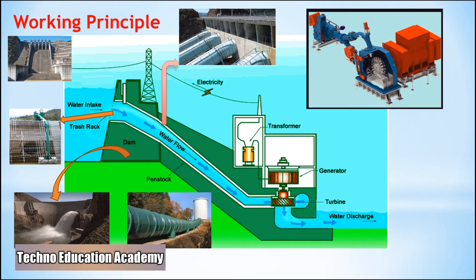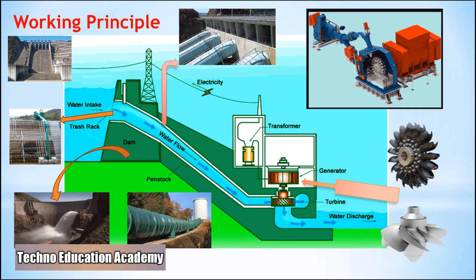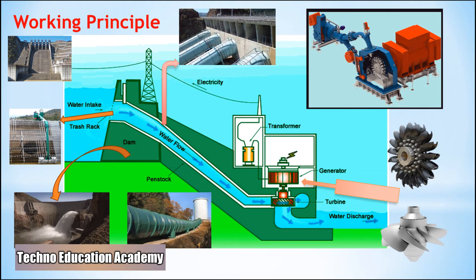The next component is the power station, where electricity is produced. The power station contains a turbine coupled to a generator. Water brought to the power station rotates the blades of the turbine, producing torque and rotation of the turbine shaft. This rotational torque is transferred to the generator and converted into electrical energy.